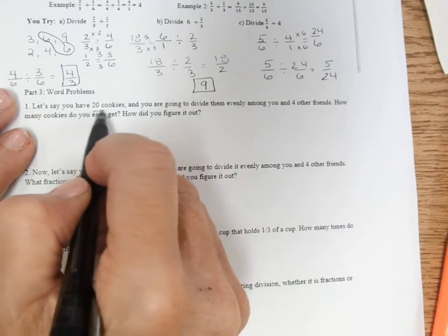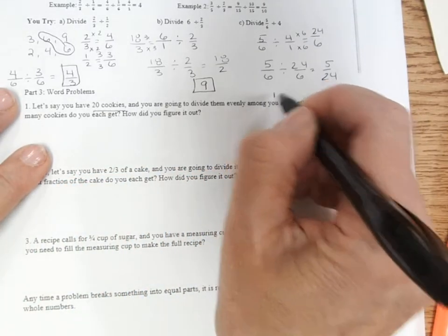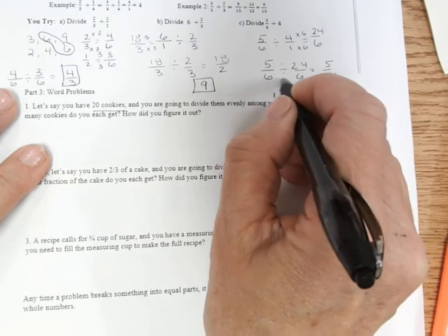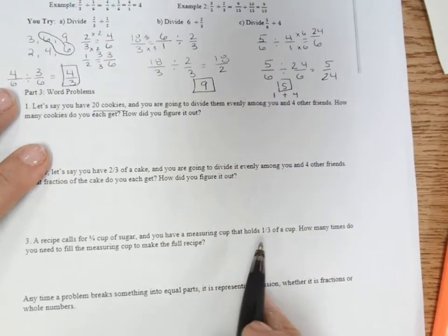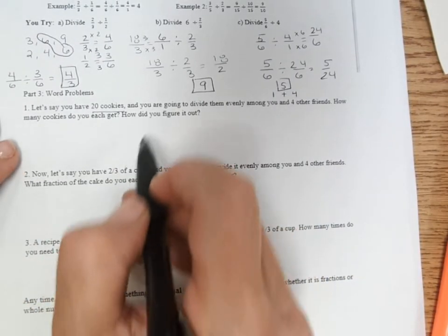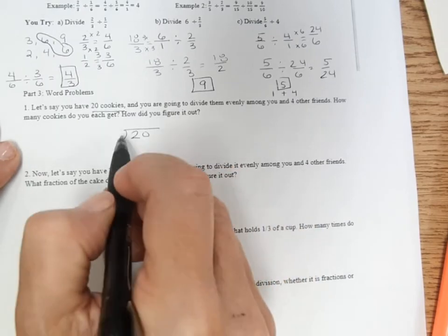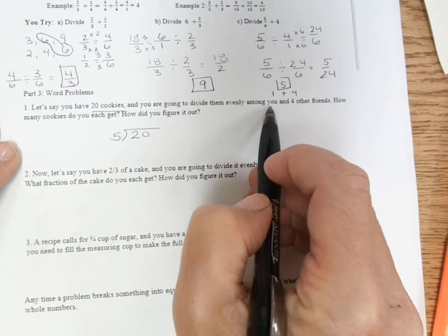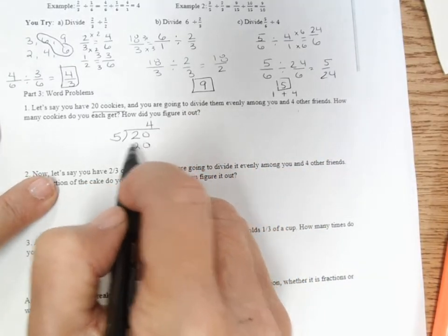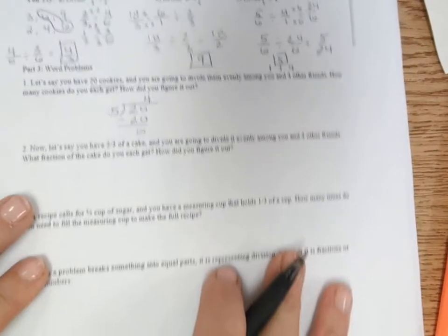Next question. Let's say you have 20 cookies and you are going to divide them evenly among you and four others. That means you are sharing these cookies between five people. How many cookies do you each get? How did you figure it out? So I'm going to take the 20 and divide it by five because it's me and four other people. And 20 divided by five, of course, is four. So how many cookies do we each get? Four.